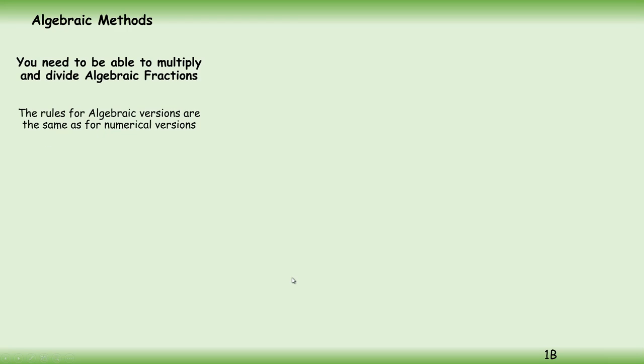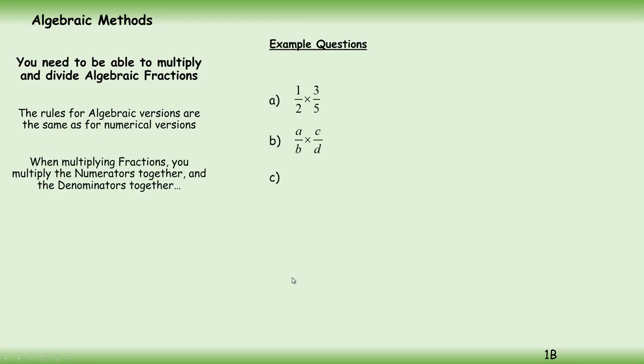We'll look at some examples. Three examples to look at, nice and straightforward. Should be an easy morning. In the first one we've got one half times three fifths. Nothing cancels top and bottom, so we multiply the numerator: 1 times 3 is 3. Multiply the denominator—excellent.